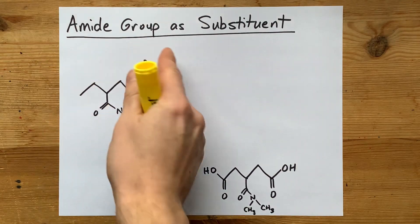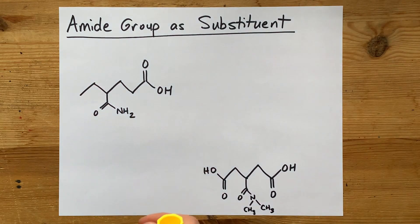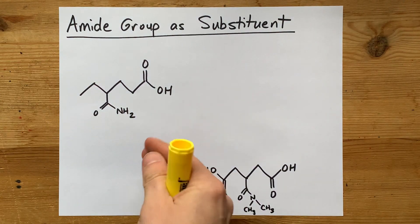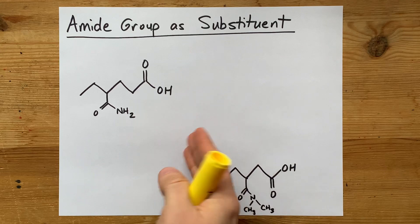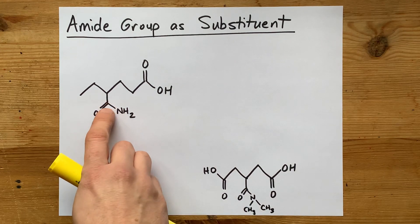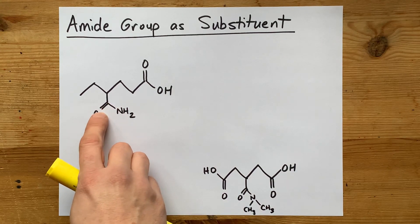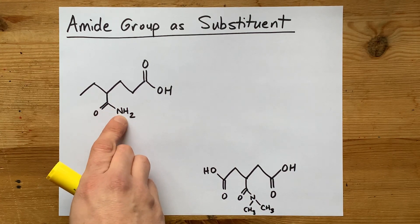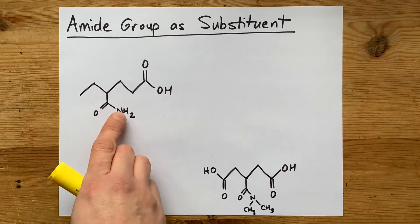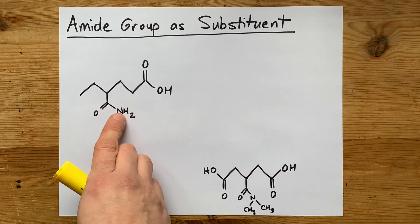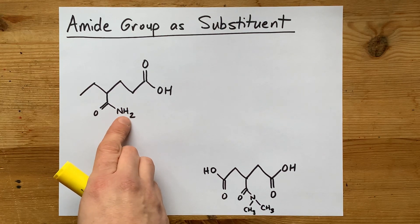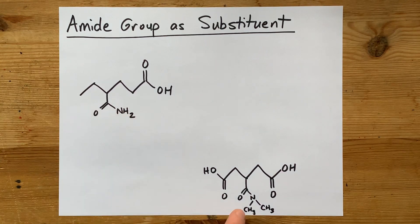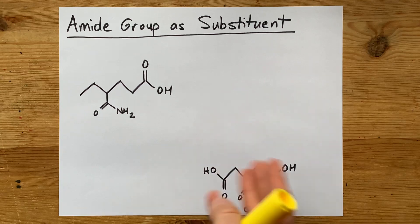Let's talk about amide groups as substituents. An amide group is a C double bonded to an O, and that same C is single bonded to an N. The N might be substituted with hydrogens, or it might have other substituents on it.